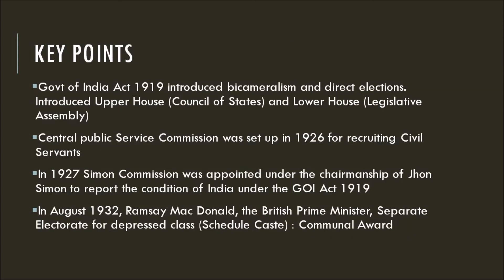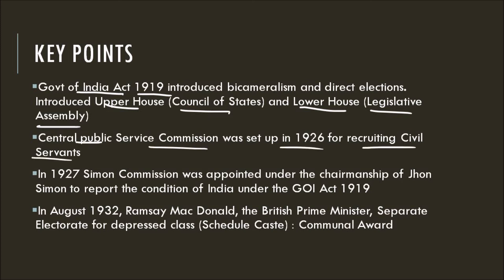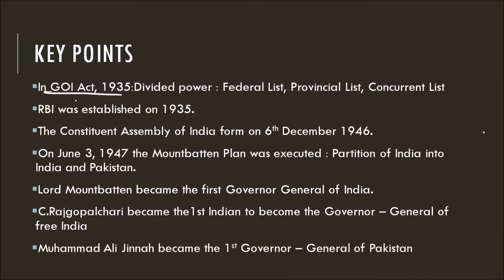Let's recap the key points. Bicameralism and direct elections were introduced by the Government of India Act 1919. It introduced the Upper House or Council of States and Lower House called the Legislative Assembly. The Central Public Service Commission was set up under this Act in 1926 for recruitment of civil servants. In 1927, Simon Commission was appointed under the chairmanship of John Simon. In August 1932, Ramsay MacDonald introduced a separate electorate for the Depressed Class or Scheduled Caste, called the Communal Award. Under the Government of India Act 1935, power was divided into the Federal, Provincial, and Concurrent Lists. The Reserve Bank of India was established in 1935.